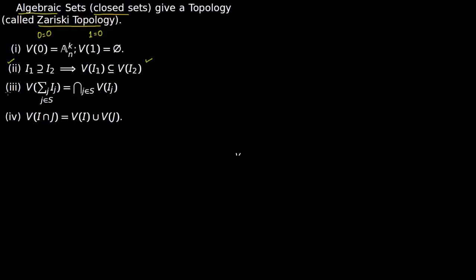Statement 3 is also very trivial: the zeros of F plus G — you find the zeros of F and the zeros of G, and the zeros of F plus G is nothing but the common zeros of F and G. This common intersection becomes the intersection sign, and the summation is the sum of ideals F and G.